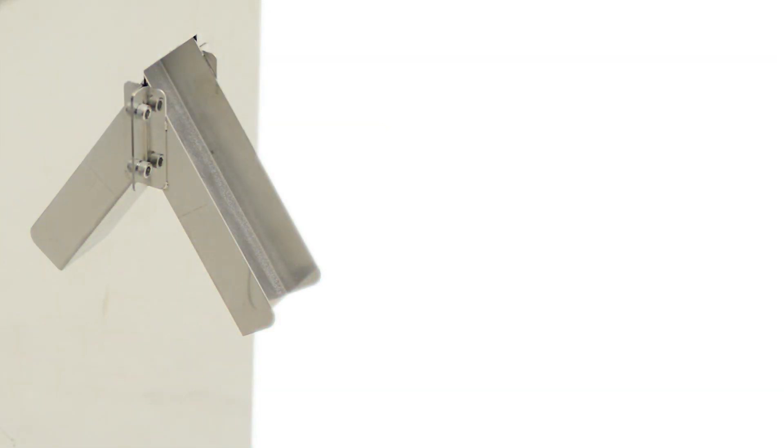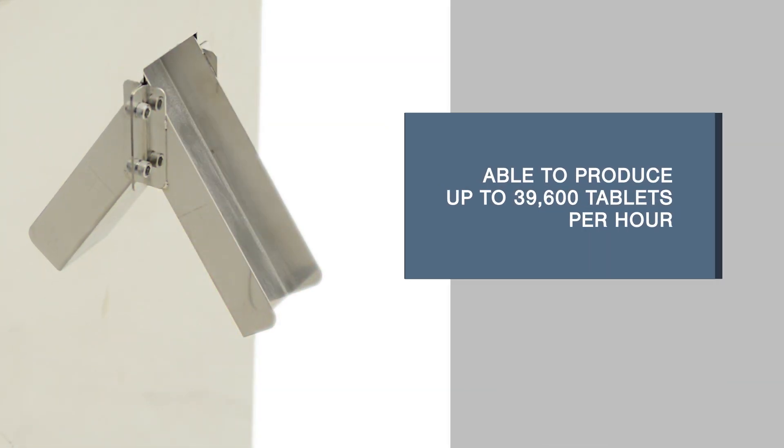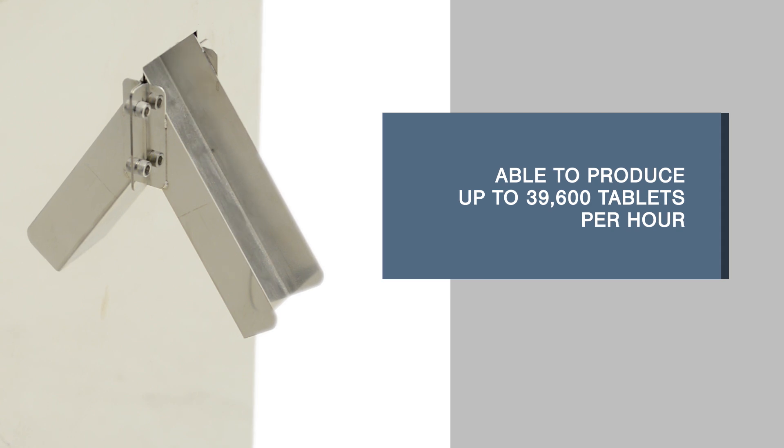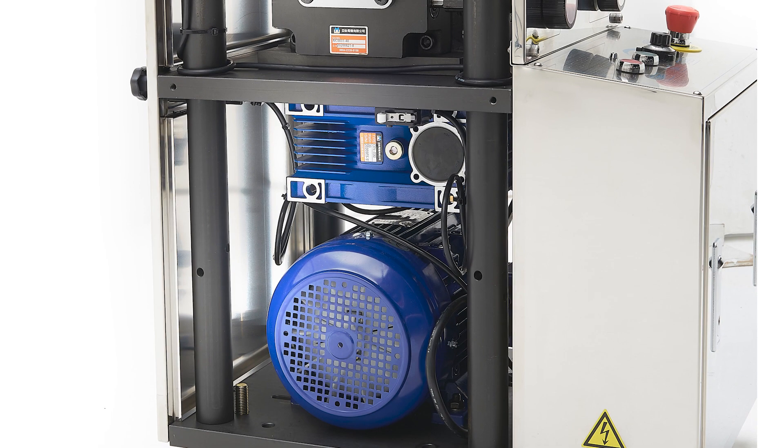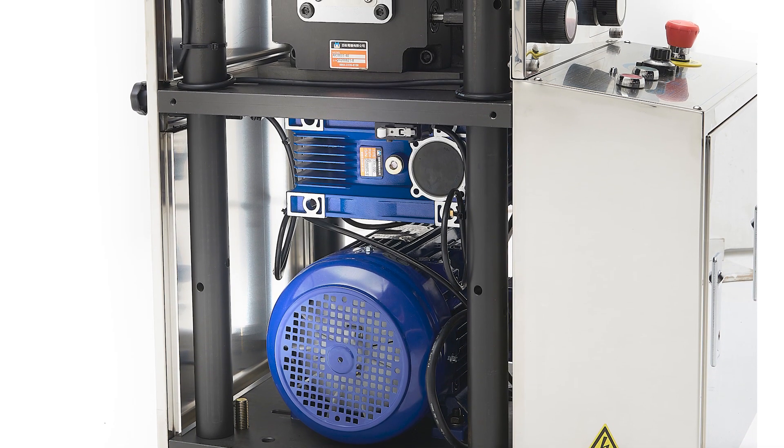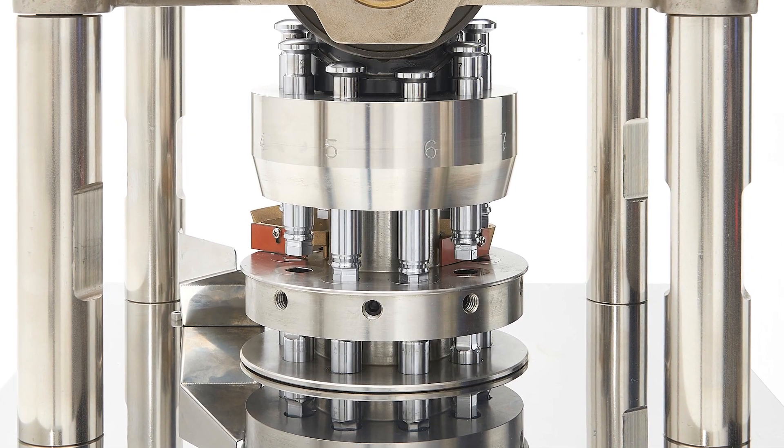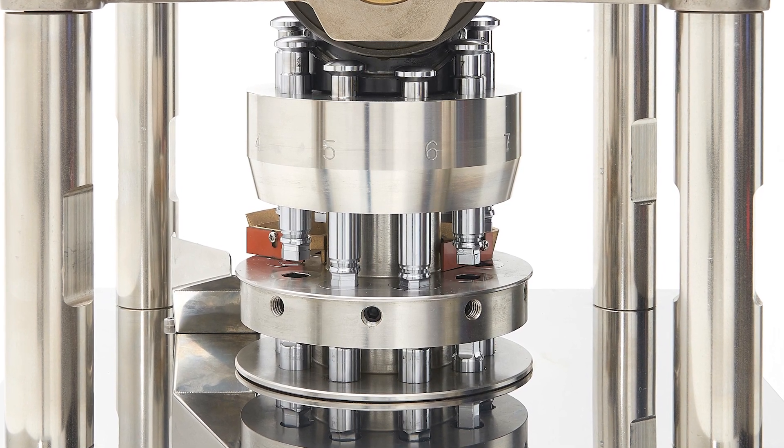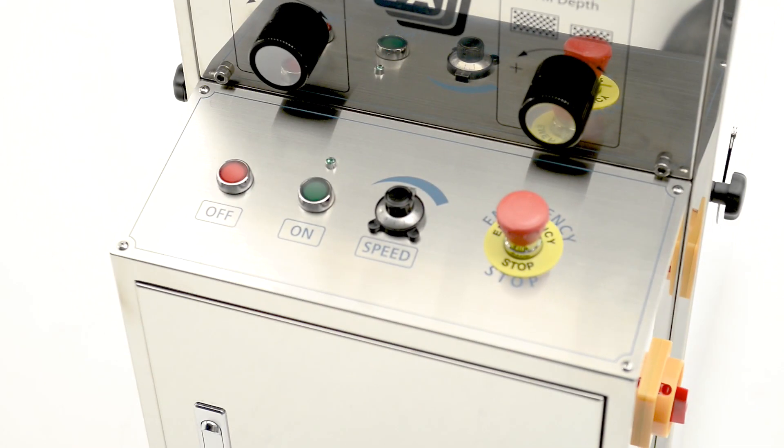The RTP-118 can produce 39,600 tablets per hour depending on the tooling configuration, making it faster than most presses in its range. This is down to its 3.7kW powerful motor, improved bearings, and reduced turret pitch circle diameter, allowing the press to produce at a faster rate.